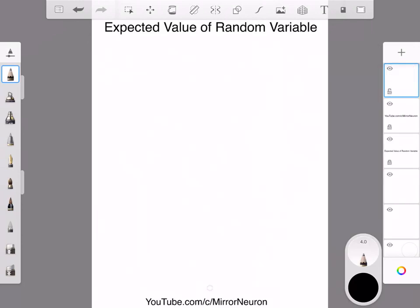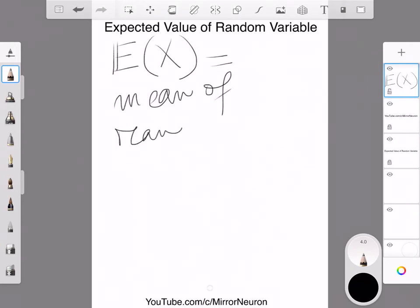Now, a few additional points. Your expected value is always represented, in most cases, by E of X. And sometimes, this is also known as mean of random variable. And this is also sometimes represented by mu of X.